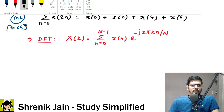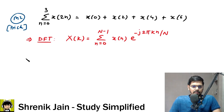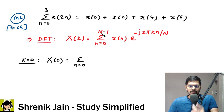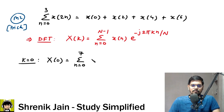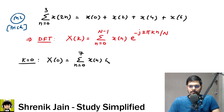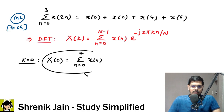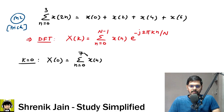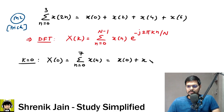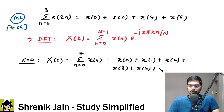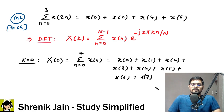Now check it out. If I substitute k=0 in this formula, then X(0) = summation from n=0 to 7 of x(n), since e to the power 0 becomes 1. So X(0) equals the sum of all x(n) from n=0 to 7, i.e., x(0) + x(1) + x(2) + ... + x(7). You do not know the individual values of x(n), but you can see you are getting all 8 terms.